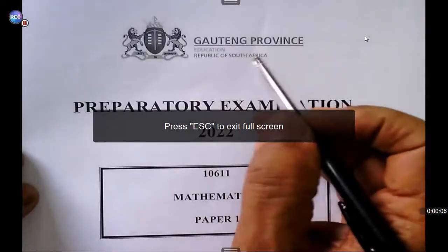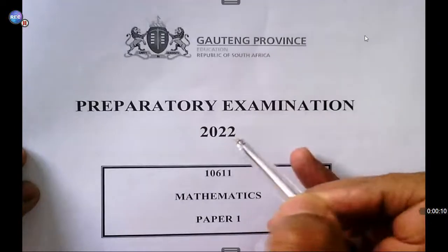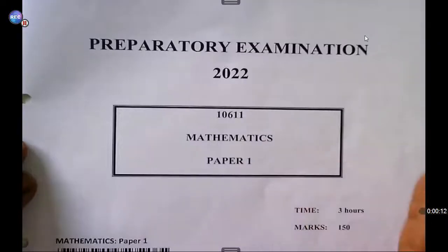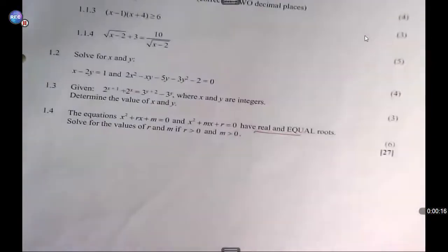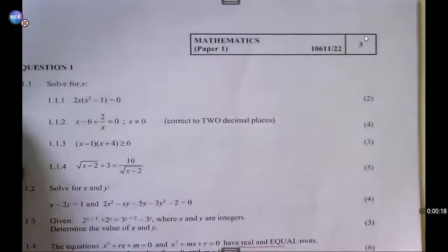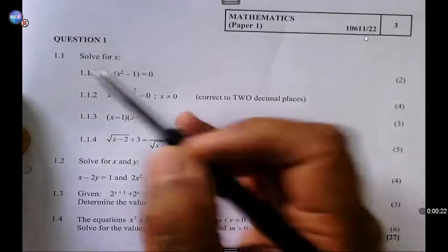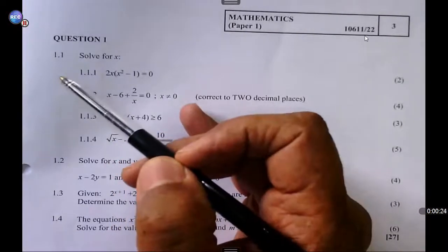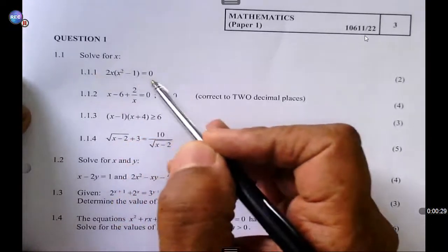All right, Houghton Province Prep Exams 2022, Paper 1, Mathematics. If you look at question 1, then there are four different sections. The first one is solve for x, and there is your equation.